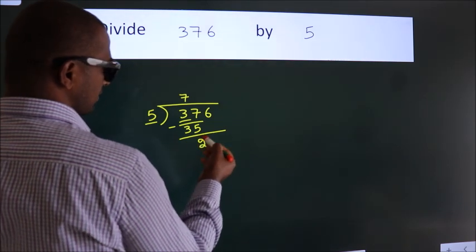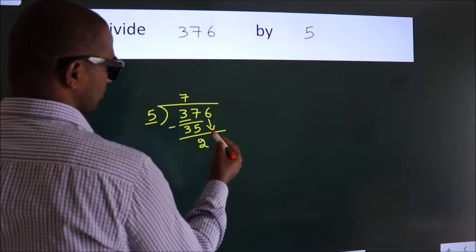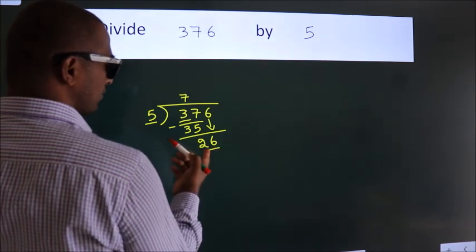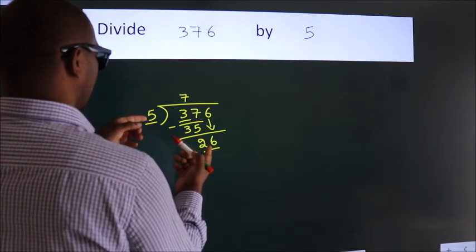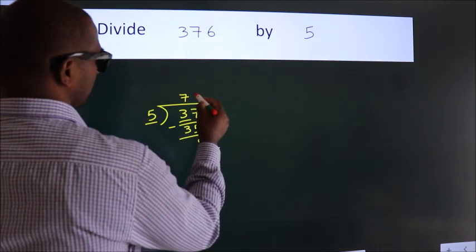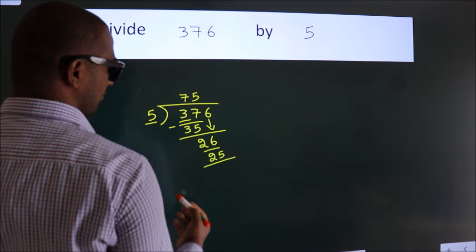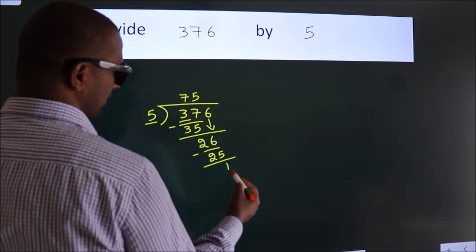After this, bring down the next number. So, 6 down. So, 26. A number close to 26 in 5 table is 5 times 5 equals 25. Now, we subtract. We get 1.